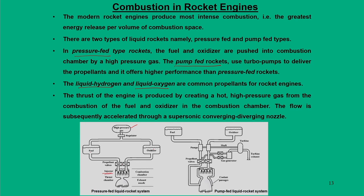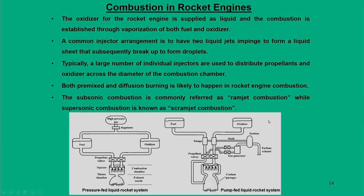In the pressure-fed type, high-pressure gas pressurizes the fuel and oxidizer tanks through a propellant valve, injecting fuel into the thrust chamber. In the pump-fed type, two pumps provide the necessary pressure to the propellant valve to inject fuel into the combustion zone. Thrust is produced by creating hot high-pressure gas from combustion, subsequently accelerated through a supersonic diverging nozzle.